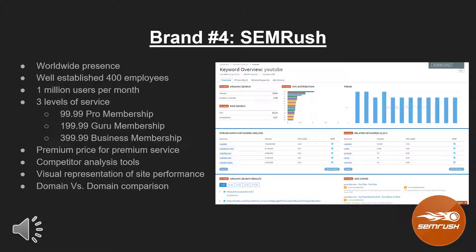The fourth brand we reviewed was SEMrush. SEMrush has a worldwide presence and is well-established with over 100 employees, serving about a million users per month. The SEMrush platform was created with one goal in mind: to help level the playing field and make competition fair in the SEO world. It does this by offering users a deep analysis of their site and tools to analyze competitor sites, like domain versus domain, along with other interactive tools throughout the dashboard.